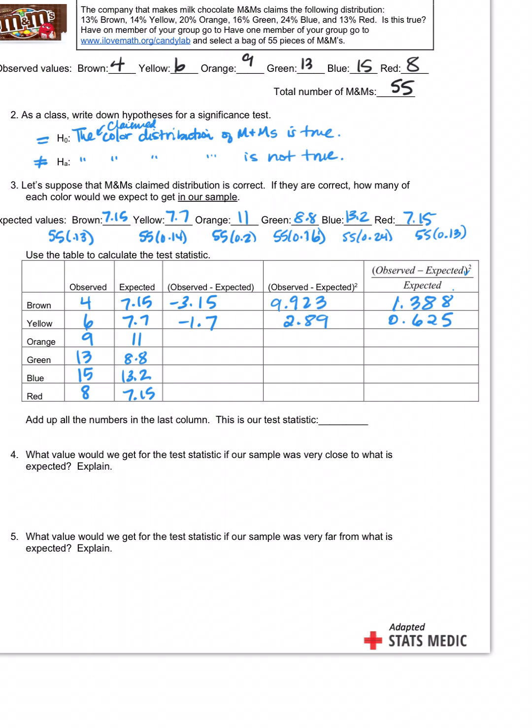Divide it by expected. Did I do that right? I got something different here. Wait, I think I did it wrong initially. This is why we hate doing this by hand. Observed minus expected, squared, divided by expected. 1.38 was right.